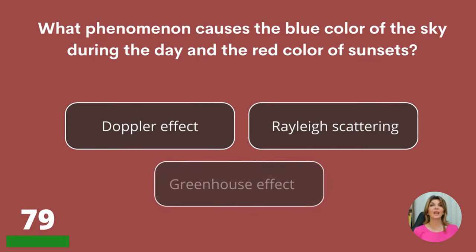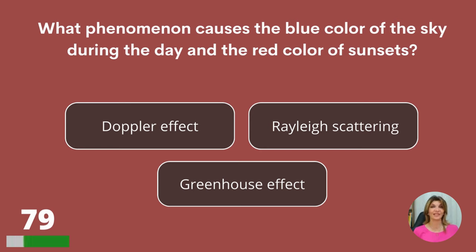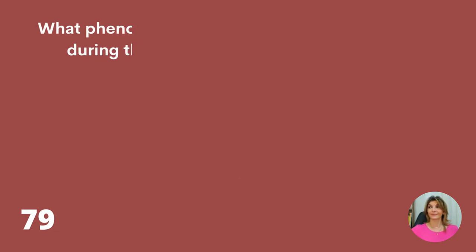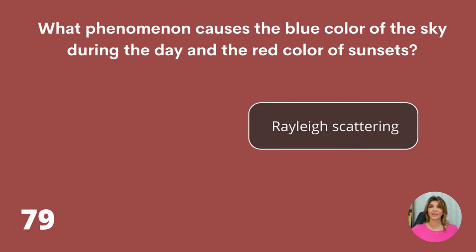What phenomenon causes the blue color of the sky during the day and the red color of sunsets? The Doppler effect, Rayleigh scattering, or greenhouse effect? Rayleigh scattering.